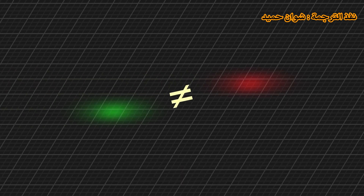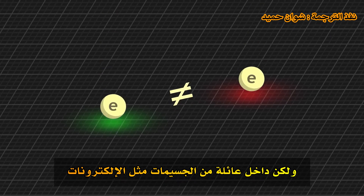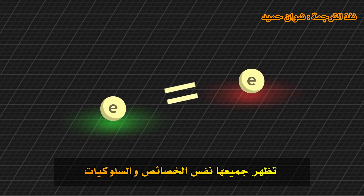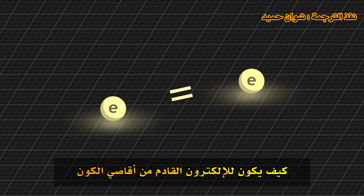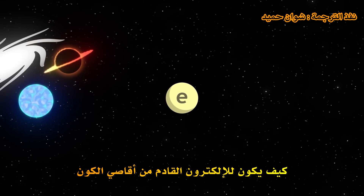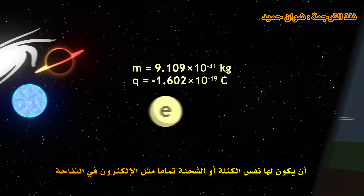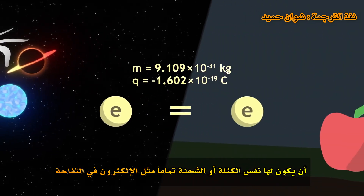Secondly, quantum mechanics treats each particle independently. However, within a family of particles, such as electrons, all exhibit the same properties and behaviours. How is it that an electron coming from the far reaches of the cosmos has exactly the same mass or charge as an electron in an apple?